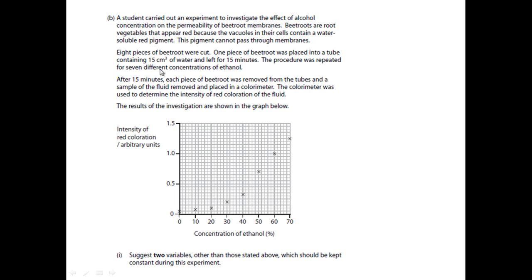The procedure was repeated seven times, so doing repeats. Each piece of beetroot was removed from the tubes and a sample of fluid removed and placed in the calorimeter, essentially a piece of equipment to determine the intensity of the red coloration. So suggest two of the variables other than those stated above which could be kept constant during this experiment.